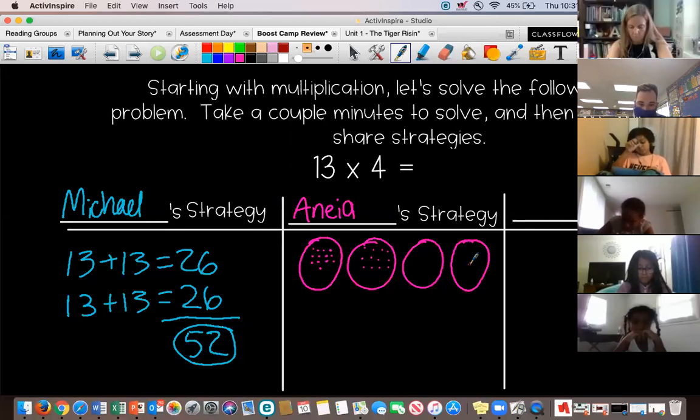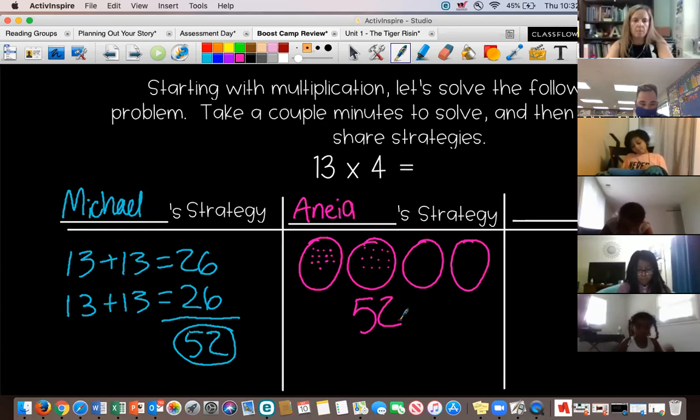So you added up 13 dots in circle one, plus 13 dots in circle two, plus 13 dots in circle three, plus 13 dots in circle four, and you got 52. Awesome. Did anyone do it differently?